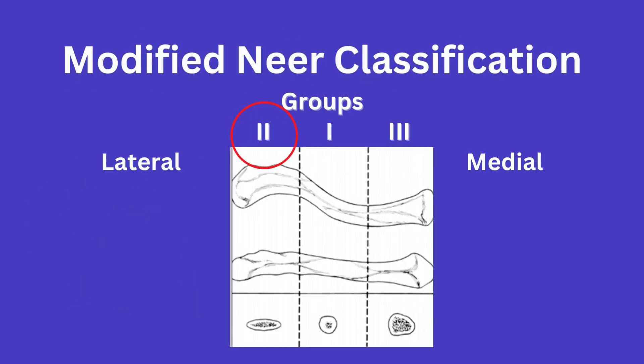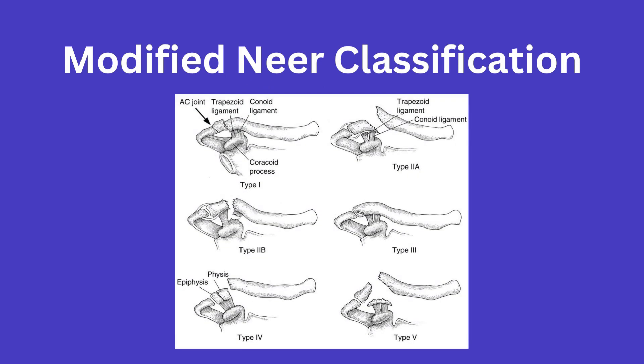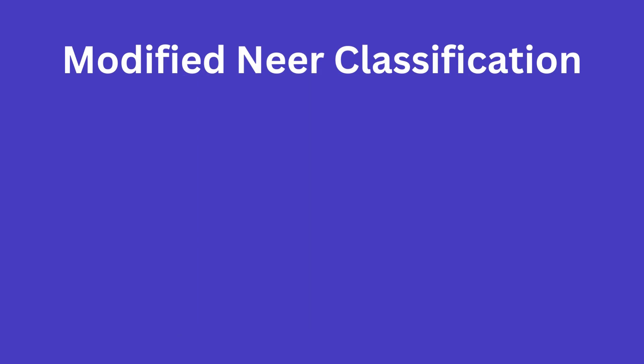The Neer classification simply delves a bit deeper into the Allman Group 2 fractures. The Neer classification has 5 types.